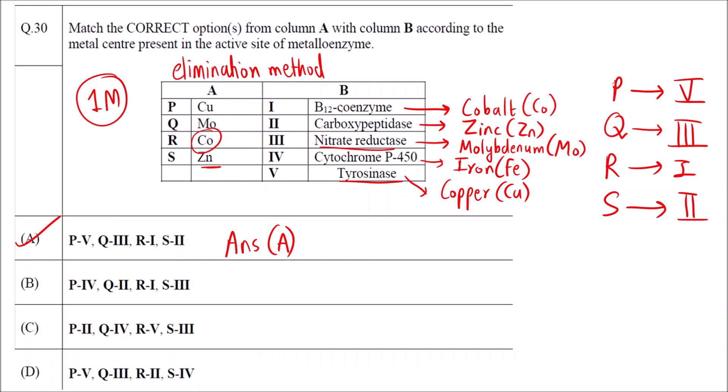But there are some common ones like B12 coenzyme. Everybody knows the metal present is cobalt. So for R it is 1. Check where R for R it is 1 in option A and B. This is 5 and 2. So C and D are incorrect. Two options are eliminated.